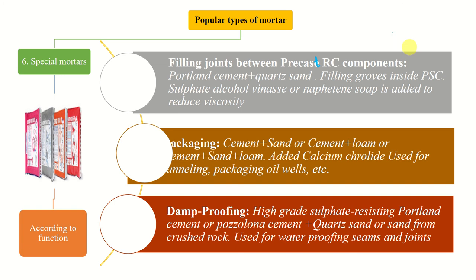In prestressed concrete, extension bars are inserted, pressurized, and locked, giving initial stress so that under load the structure returns to its original position. The wire ducts are then completely filled by cement mortar — that is the special mortar. Portland cement plus quartz sand is used for filling grooves inside prestressed concrete. Sulphate, alcohol, and naphthalene soap are added for reducing viscosity, since viscosity should be very low in order to inject the cement mortar inside the ducts.